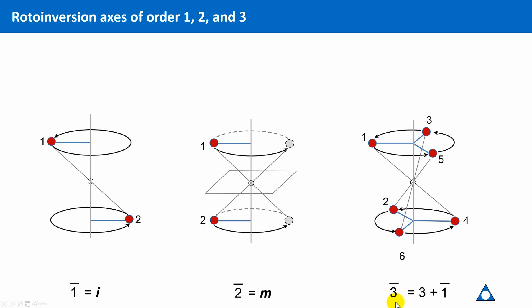This is different for the rotoinversion of order 3, which is shown here on the right. As you can see, rotoinversions of odd order 1 and 3 possess automatically a center of inversion.